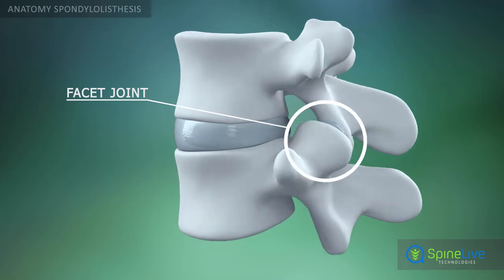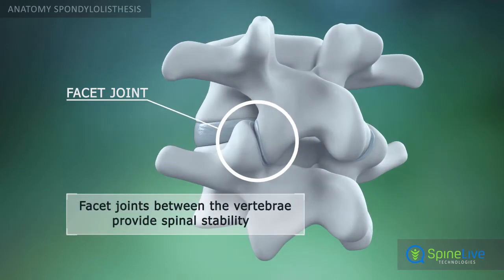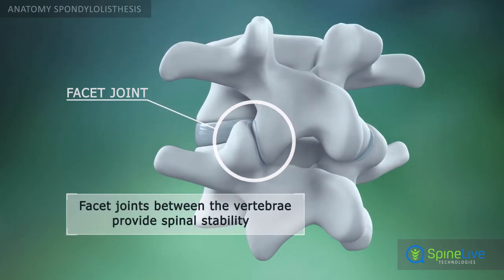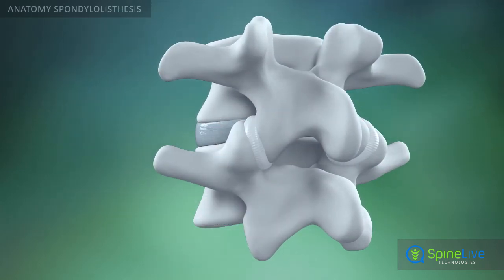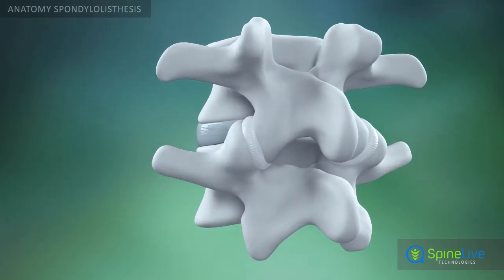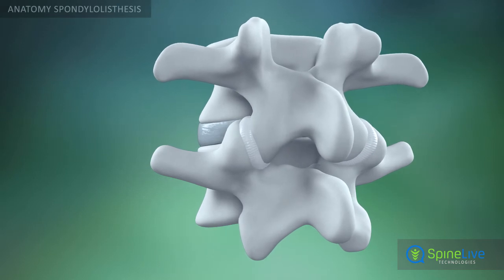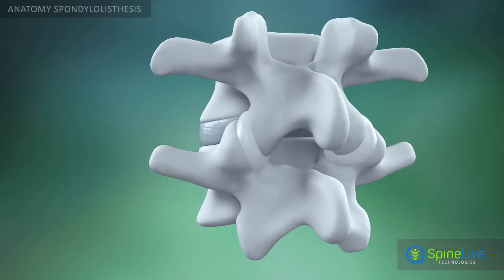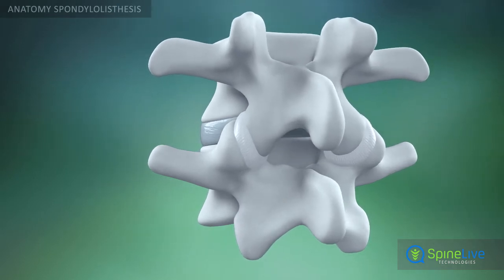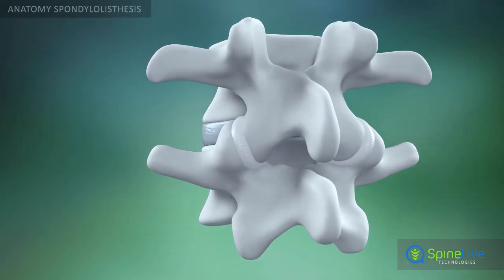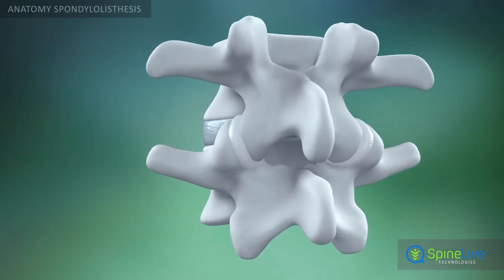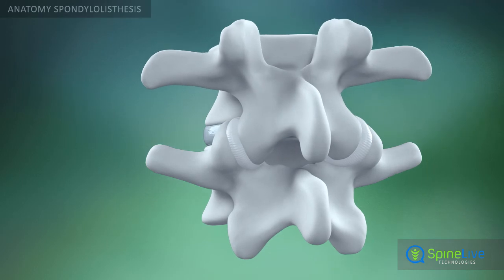Facet joints are located between each pair of vertebrae. They guide and limit the movement of the spine, providing stability and bearing a share of the load on the spine.